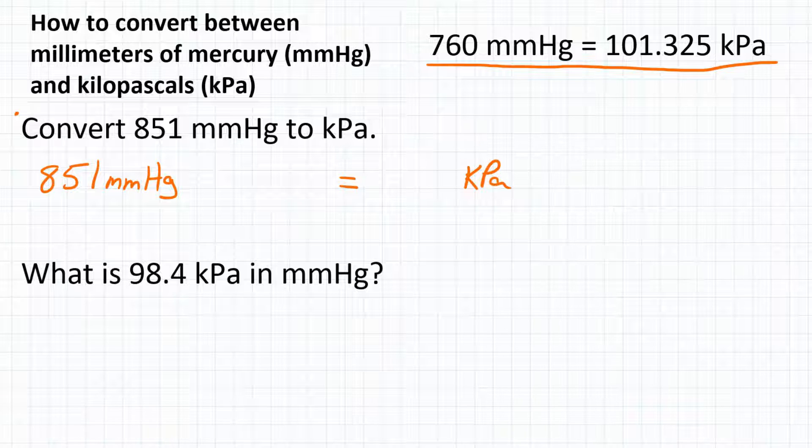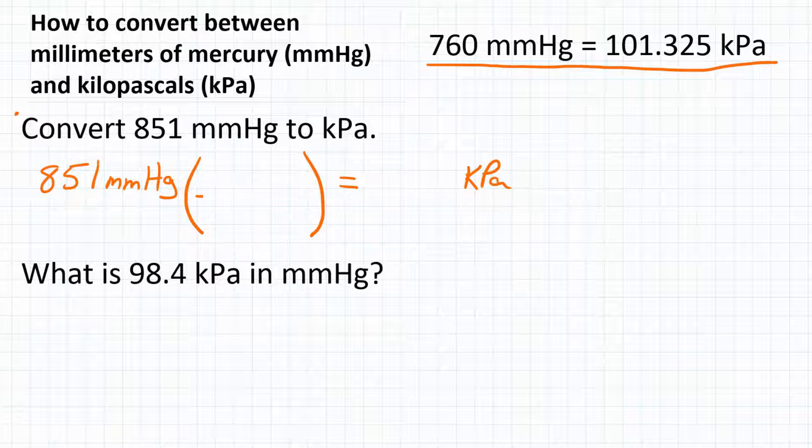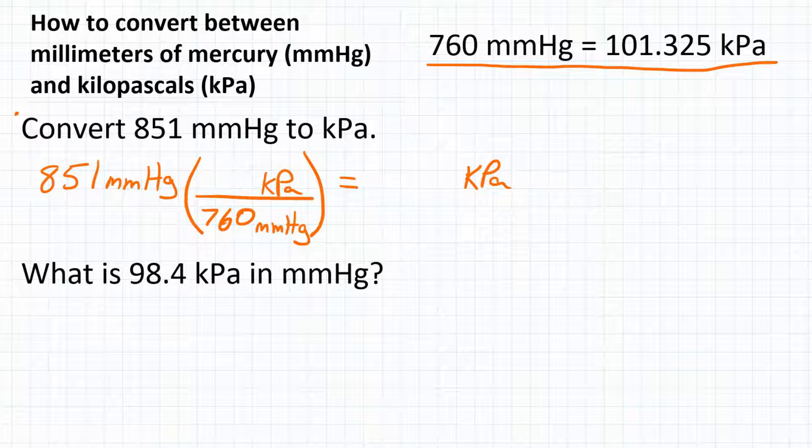To go from millimeters of mercury to kPa, we're going to multiply by a conversion factor. It'll be a one-step conversion, so one fraction, one conversion factor. This conversion factor is the relationship we talked about. Looking at our units, millimeters of mercury is going to be on the bottom, and kPa will be on top. So then we can use that relationship where 760 millimeters of mercury is equal to 101.325 kPa.